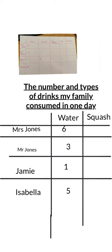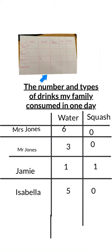Then I'm going to look at my squash column and see how many glasses of squash Mrs. Jones had — none, so I'm going to put zero in here. And Mr. Jones had none, so I'm going to put zero in there. Zero means nothing. Jamie had one glass of squash, and Isabella had zero. You're going to keep going until you have changed your tally chart into a table.